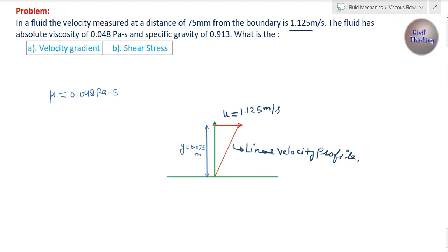Now for a linear velocity profile, we have to find the velocity gradient. Velocity gradient is the slope of this straight line. If this angle is theta, then we know velocity gradient is denoted by du/dy, which is tan theta, because tan theta gives the slope.